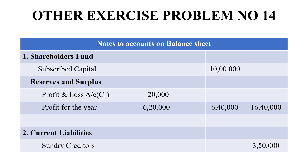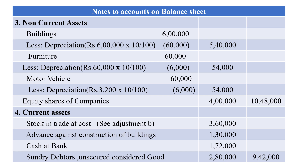Now for the Balance Sheet and working notes. Under shareholders' fund: subscribed capital is Rs. 10,00,000 (as given in the question, not in adjustments). Reserves and surplus: profit and loss credit (retained earnings) Rs. 20,000 plus net profit Rs. 6,20,000 = Rs. 6,40,000. Total shareholders' fund = Rs. 16,40,000. Current liabilities = Rs. 3,50,000. Next, non-current assets include building, furniture, and motor vehicles — depreciation is calculated and deducted from each.